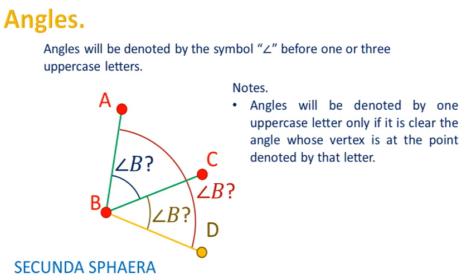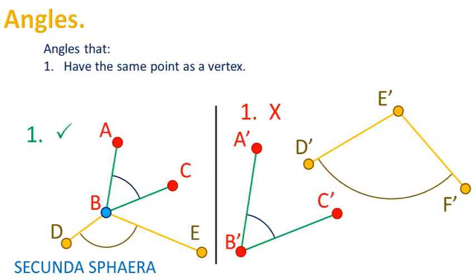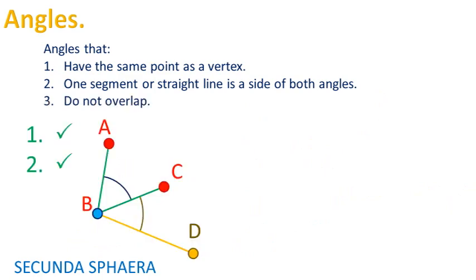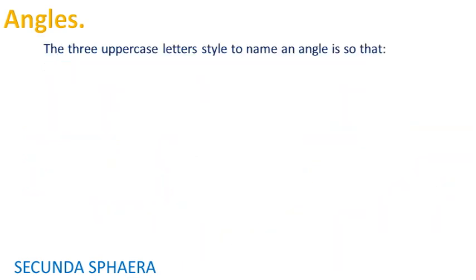It is common for two or more angles to have the same point as a vertex. If two angles have the same point as a vertex, one of the sides of the angle is also side of the other angle, and they do not overlap, the angles are called adjacent. In order to avoid ambiguity, it will be more often used the style of three uppercase letters to name an angle.